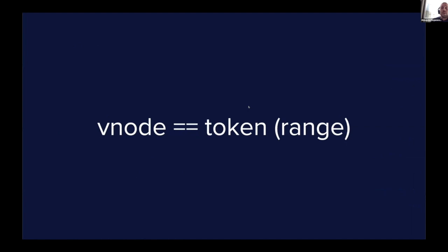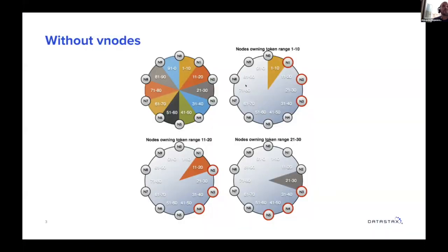Just for vocabulary, we usually use vNodes as a synonym for token or token range. So if I talk about tokens, token ranges, or vNodes, it's the same thing.